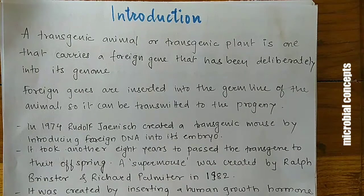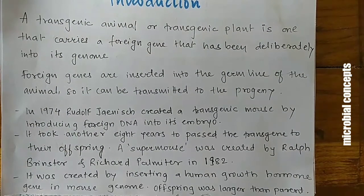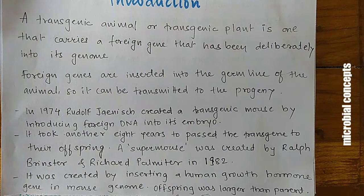A super mouse was created by Ralph Brinster and Richard Palmitter in 1982. They studied the transfer of the transgene to offspring and were successful. This super mouse was created by inserting a human growth hormone gene into the mouse genome, and the offspring was larger than the parent.